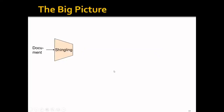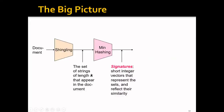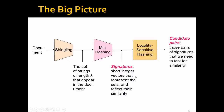Looking at the big picture: the input is the document. The shingling step generates shingles — a set of strings of length k that appear in the document. The second step generates short signatures, which are short integer vectors representing the sets, expected to reflect their similarity but much shorter than the originals. The last step, locality-sensitive hashing, finds candidate pairs — signatures that need to be tested for similarity.